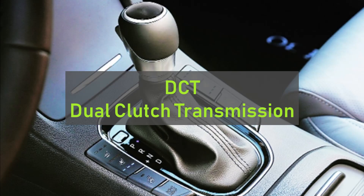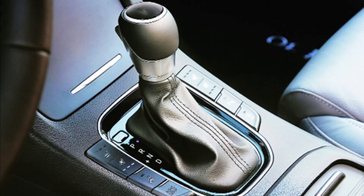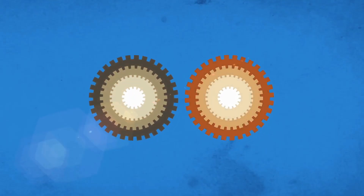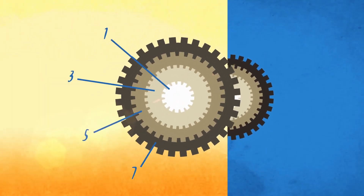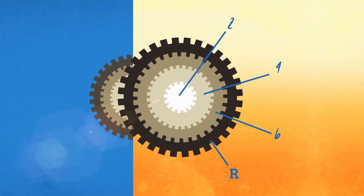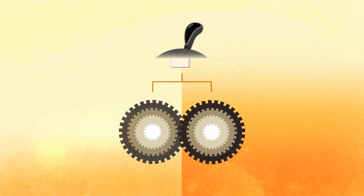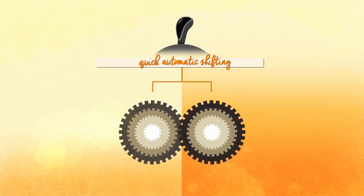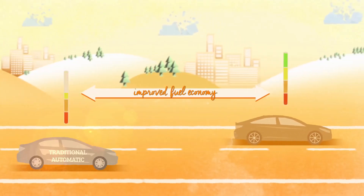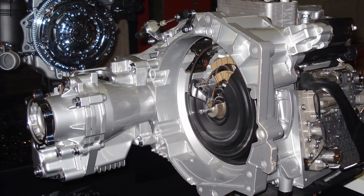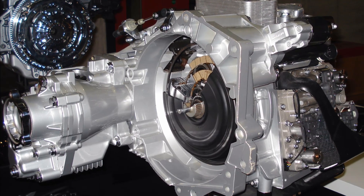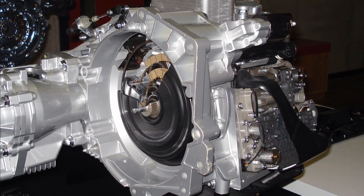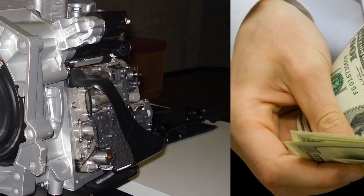Let's now talk about DCT. A dual clutch transmission or DCT uses two separate shafts with their own clutches for gear shifts — one shaft for odd numbered gears and the other for even numbered gears. This type of automatic transmission provides really quick shifts and also delivers good fuel efficiency. However, since the technology involved is fairly complex and consists of a number of electronic components, the costs associated with manufacturing a DCT are relatively higher.